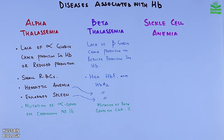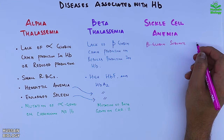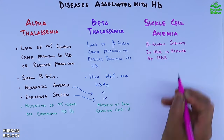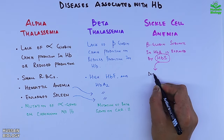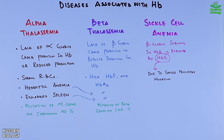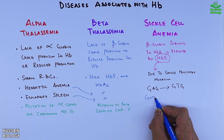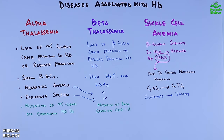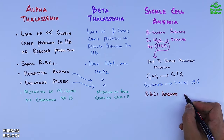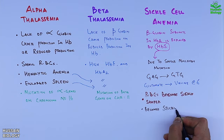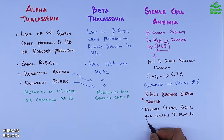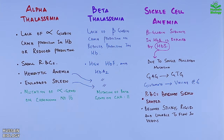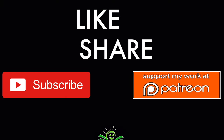In sickle cell anemia, the beta globin subunits in hemoglobin A are replaced by hemoglobin S (HbS). This formation of HbS is due to a single nucleotide mutation in which the GAG codon is replaced by GTG in the beta globin gene, resulting in glutamate being substituted by valine at position 6 of the globin chain. As a result, RBCs become deformed into a sickle shape and become sticky and rigid, preventing them from flowing properly through blood vessels.